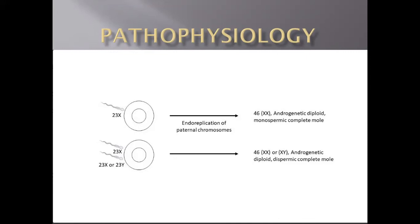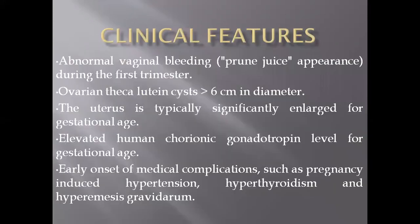Discussing clinical features: patients with complete mole commonly present in the first trimester, in contrast with partial mole where patients can go into the first or second trimester. Because of the highly proliferative trophoblastic tissue, hCG levels rise significantly. hCG can mimic thyroid hormones and other hormones, causing a burst of hormones that act on the ovaries, leading to ovarian enlargement and ultimately formation of ovarian theca lutein cysts.